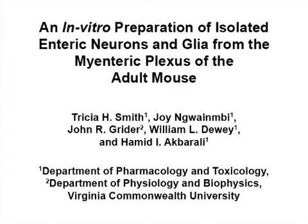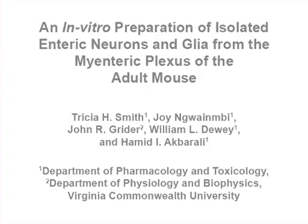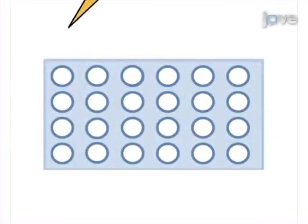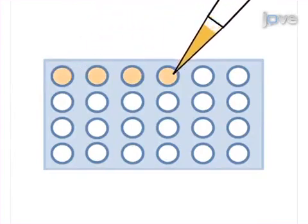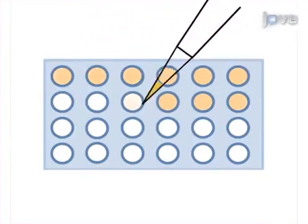The overall goal of this procedure is to isolate functionally viable neurons and glia from the adult mouse myenteric plexus. This is accomplished by first coating the sterile cell culture surface with polydelysine and laminin.